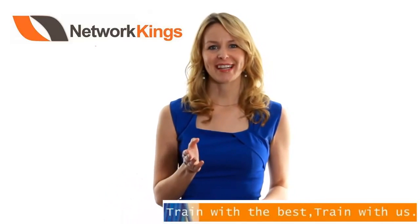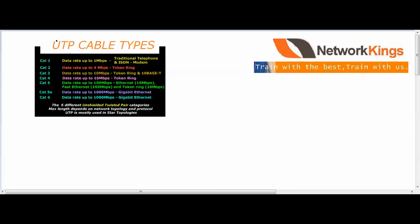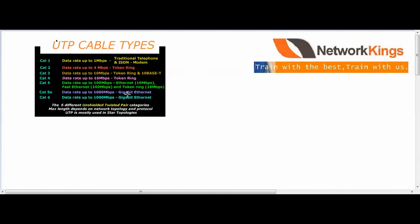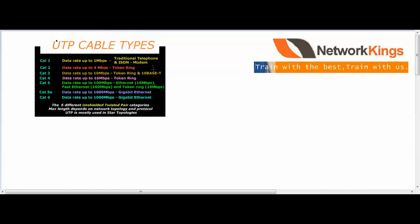Welcome to Network Kings. Today we will talk about UTP cable types. So what is UTP? Unshielded Twisted Pair Cable. In UTP we have 6 categories.